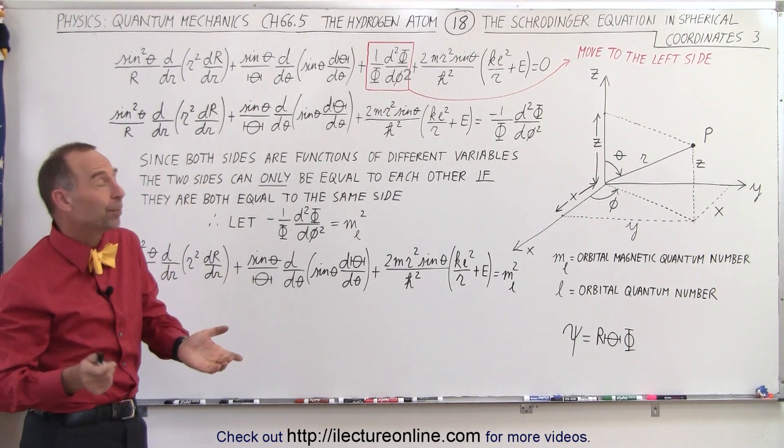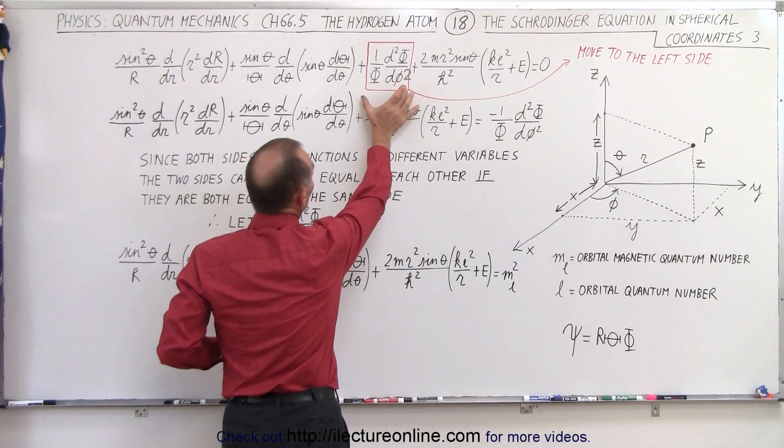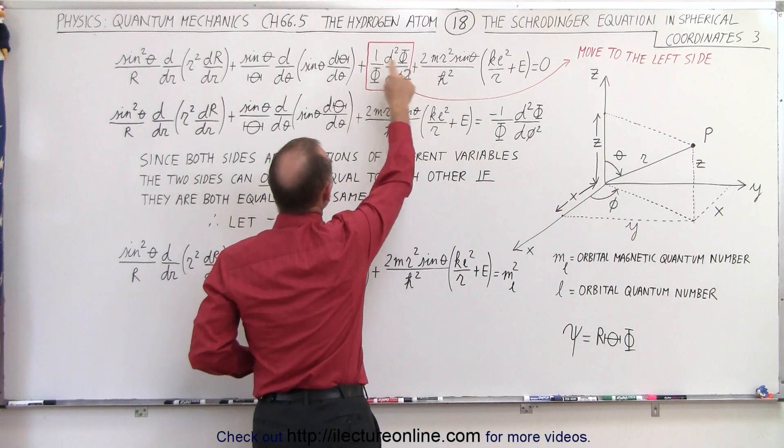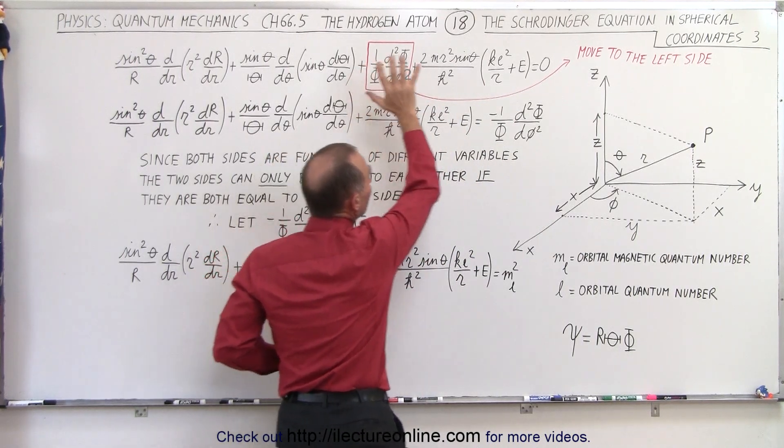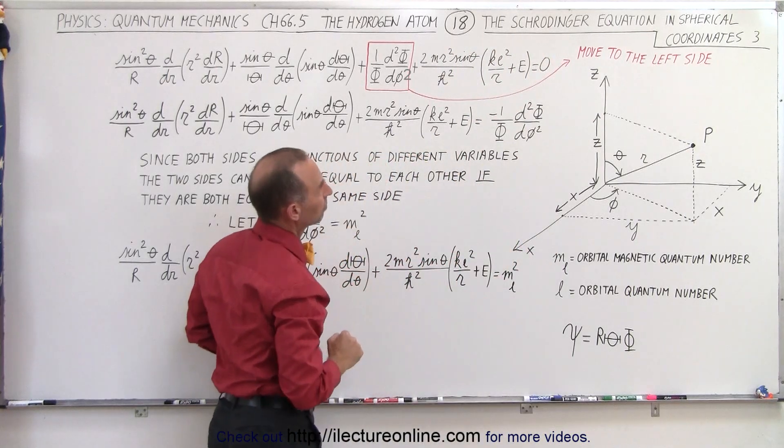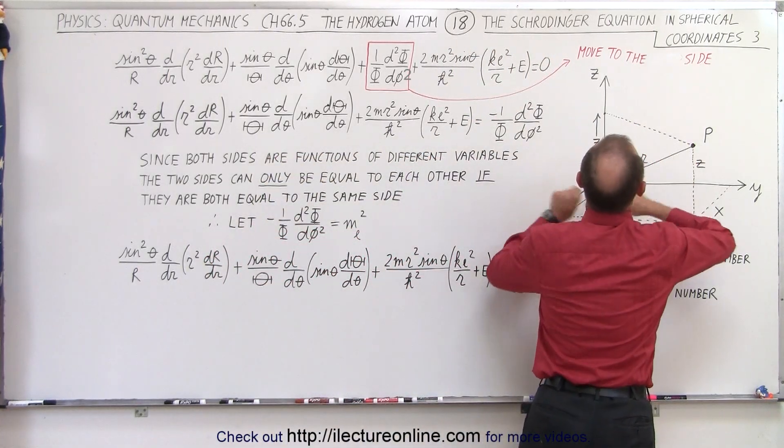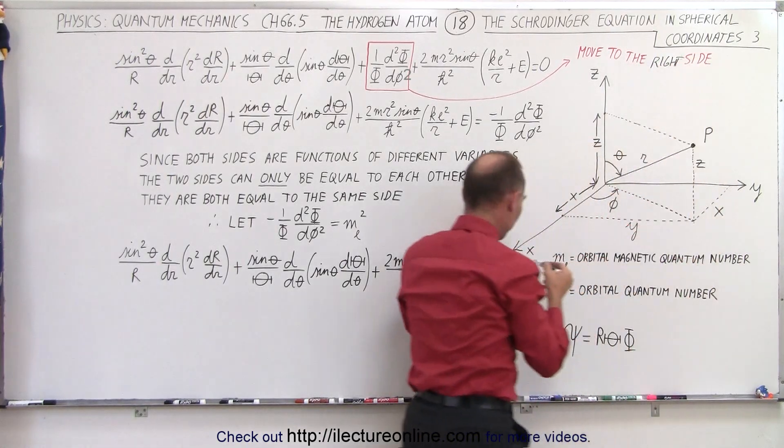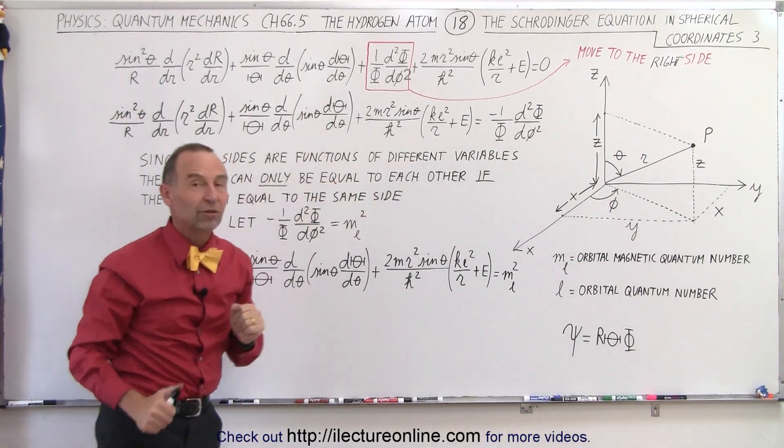So how do we do that? Well, the first thing we want to do is take this quantity right here, this term, and move it to the right side, because this term is the only term that contains the variable phi and the function phi. So we move that over to the right side. Let's call that the right side. There we go. Now that's what the differential equation looks like.